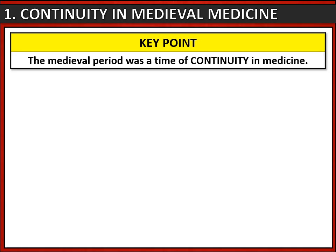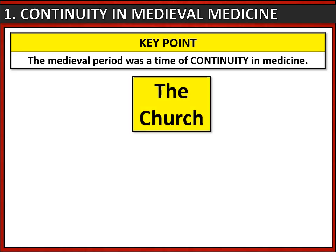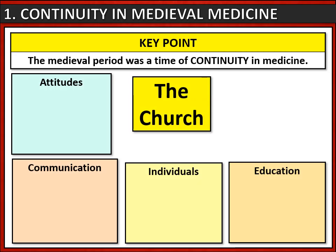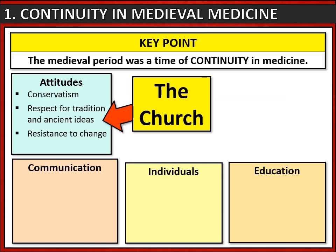The first thing to remember is that this is a time of continuity in medicine — not a lot of change in terms of ideas about disease, treatments or preventions. And why was this? Well, the key reason is the church, which was so powerful it controlled almost every aspect of life. For example, the church controlled people's attitudes. It encouraged people to take a conservative attitude, to respect tradition and ancient ideas, and that made people resistant to new ideas about medicine.